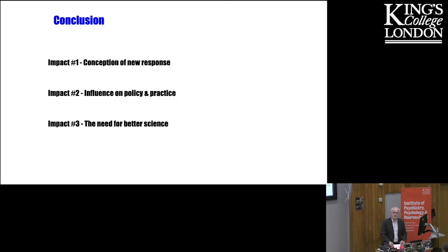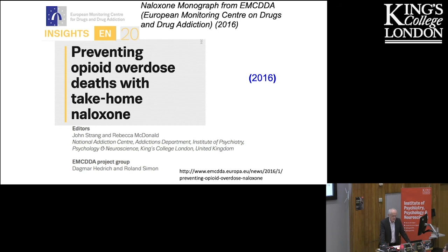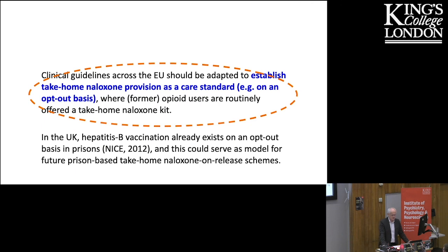Let me conclude. We've had impact through the original conception and development of the idea of take-home naloxone and associated overdose training. We've had impact on policy and practice at local, national, and international levels, and we've had impact through advancement of science with better quality studies and development of improved products. For those wanting to know more, there's a monograph we prepared in 2016 for the EMCDDA — the European Monitoring Centre for Drugs and Drug Dependence — and within this there's also the identification of the need for take-home naloxone to become a standard of care, a requirement for clinicians to discharge as part of their duty of care to their patients.